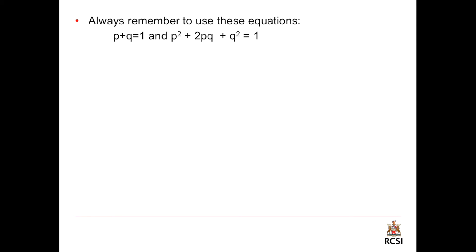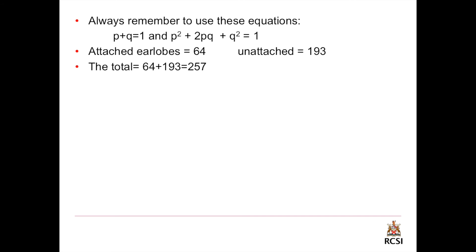Always remember to use the equations p plus q equals 1 and the binomial equation. The number of attached ear lobes is 64 and unattached is 193. Always look for the recessive first — the recessive in this example is attached ear lobes. Calculate the total: 64 plus 193 equals 257. To get the homozygous recessive, divide 64 over 257, giving q squared equals 0.249.